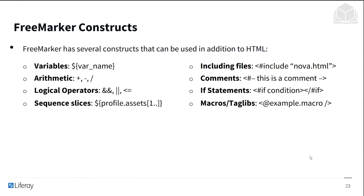FreeMarker constructs can be used in addition to HTML. This includes variables, arithmetic, logical operators, sequence slices, file includes, comments, if and conditional statements, and macros and taglibs. This gives the developer a lot of flexibility to choose what they want and implement higher-level ideas within the template itself, in addition to HTML.